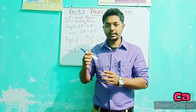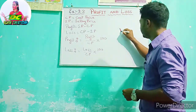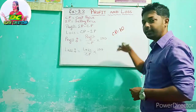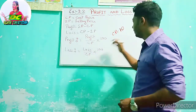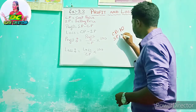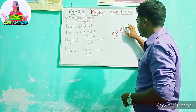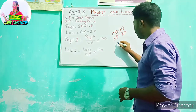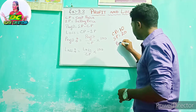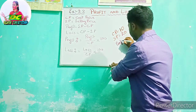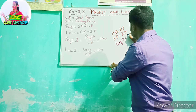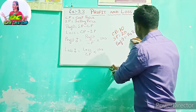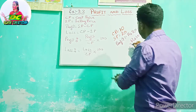So the cost price here is Rs. 10, and I need to sell it at a higher price, say Rs. 20. So how much profit am I making after selling one pen? That becomes profit or gain. The profit is Rs. 20 minus Rs. 10, which is Rs. 10.